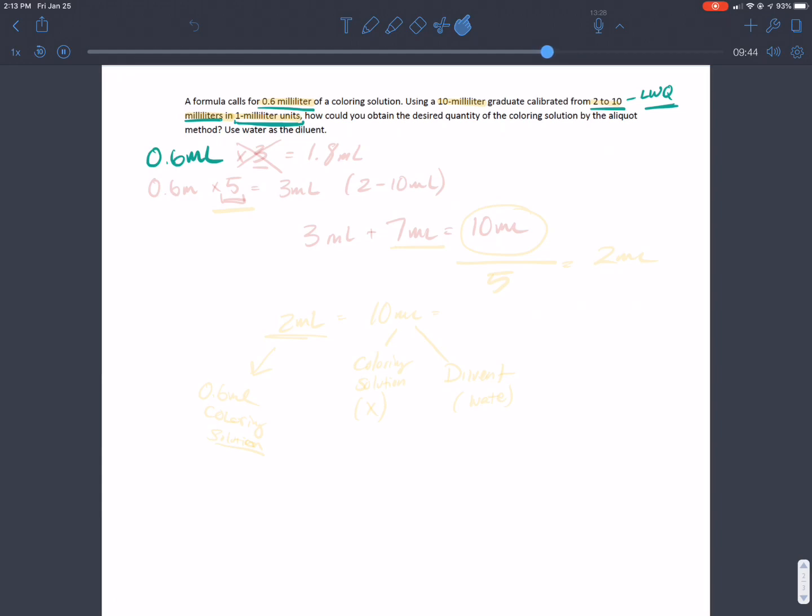So we want to start with the 0.6 milliliters and we want to have it within the range of our least weighable quantity. Much like the other problem, we want to find a value, a solid number that we can multiply this 0.6 milliliters by in order to make it fall within the range of 2 to 10 milliliters. First we're going to multiply it times 3. If we multiply 0.6 times 3, it's going to be 1.8 milliliters. And because this doesn't fall within the range of 2 to 10 milliliters, we can't use this number.